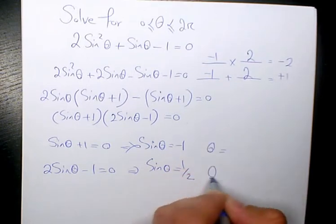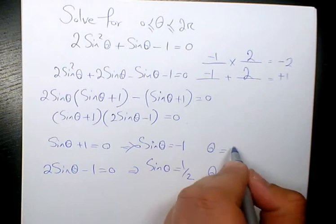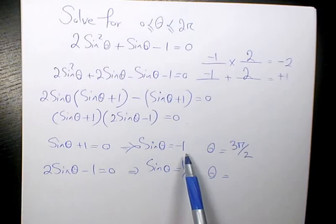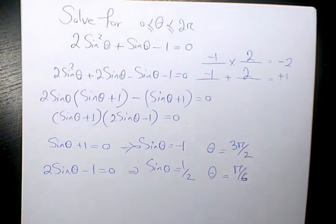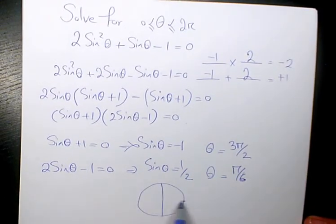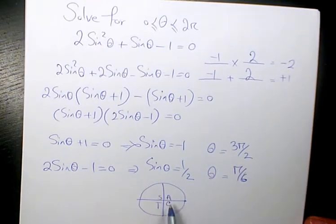So what kind of theta values you have? When sine theta equals to negative 1, it means that theta is 3 pi over 2 because sine 3 pi over 2 is going to make it negative 1. And what kind of theta value is going to make it 1 over 2? We have pi over 6 based on the special angles. And the other one must be in quadrant 2 based on the cast rule. Cast rule: All and S. It means in quadrant 1 and quadrant 2 sine is positive.